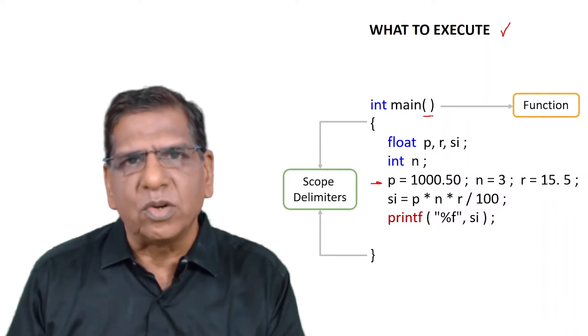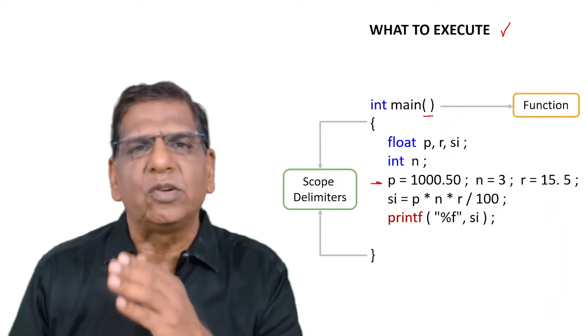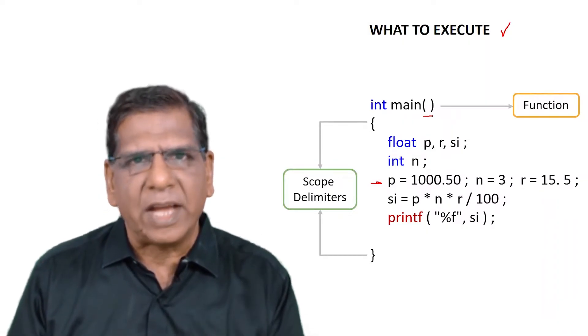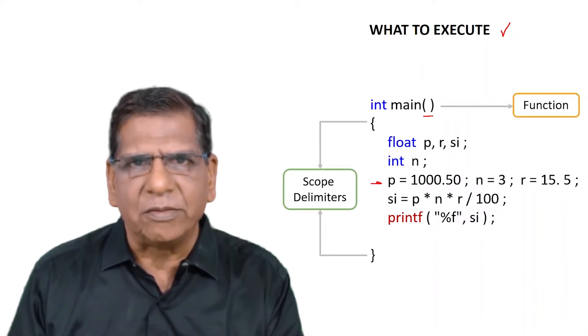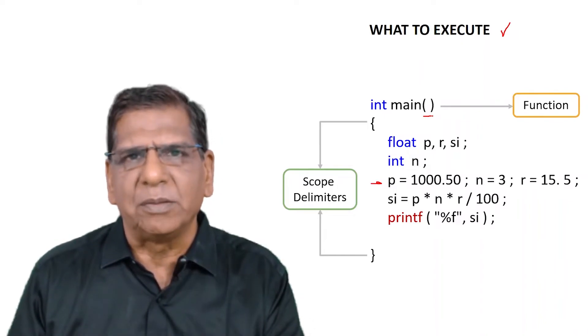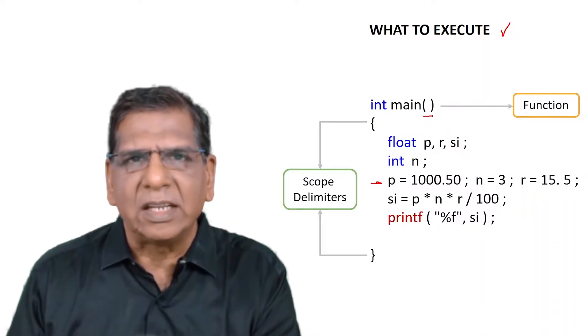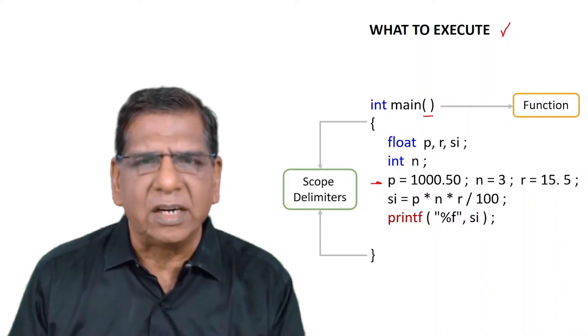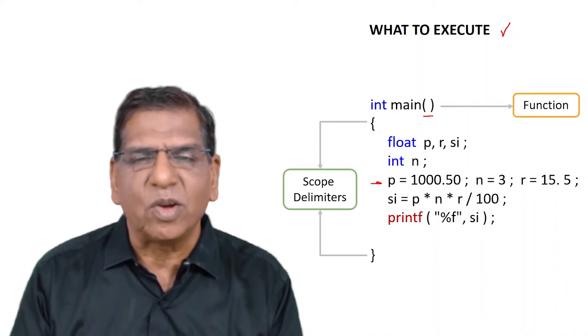Note this also very carefully that whatever is within the pair of braces has been indented to the right using a tab. Follow that habit very faithfully wherever you define a function. Put the statements within a pair of braces, give a collective name to those statements, and then indent the statements to the right using a tab key. Don't use spaces, always use a tab.